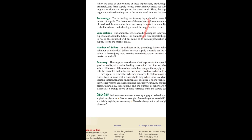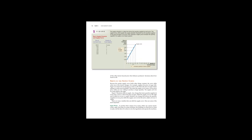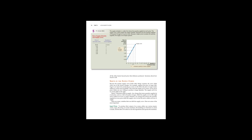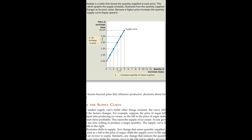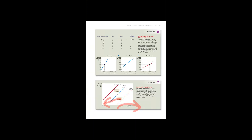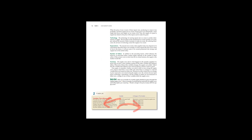Supply means the amount of goods and services that you, as a supplier, have the willingness and ability to sell at different prices. There is a positive relationship between price and supply. The reasons behind shifts in the supply curve are: input price, technology, expectations about future price, and number of sellers in the market.